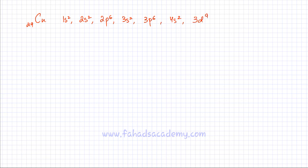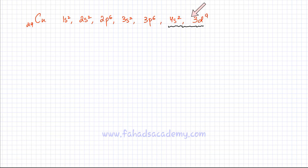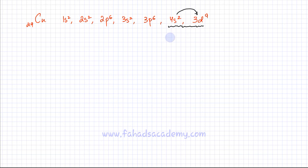If you look at the electronic configuration of copper, you would notice that the 3d subshell is almost full — one of the electrons is not paired. As mentioned before, there is very little difference between the 4s and the 3d subshell in terms of energy, so they are almost degenerate and electrons can move between the two subshells easily. The 4s has 2 electrons and 3d has 9 electrons, but if 3d had 10 electrons, that would make it even more stable — a completely full orbital is more stable. So one electron from 4s jumps and occupies the 3d, making it completely full.